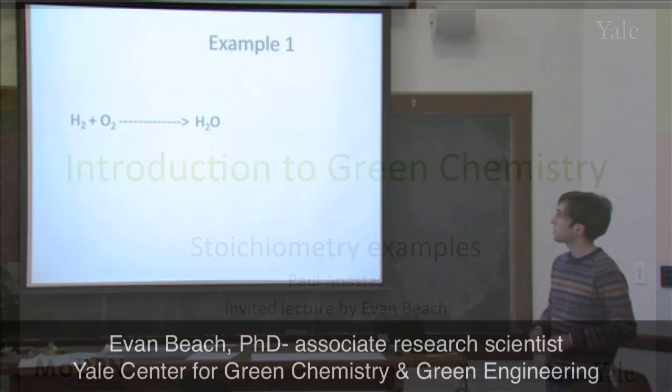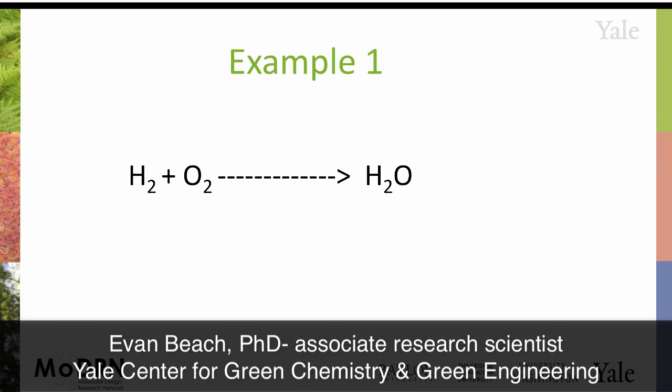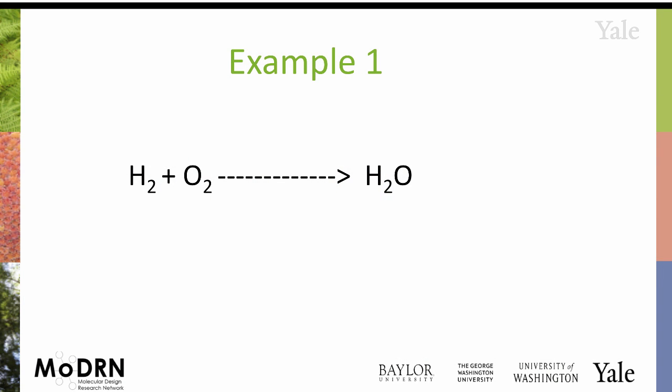Talking about balancing equations, looking at this first equation here, this is a correct reaction. So if you want to make water, you can combine hydrogen gas and oxygen gas, but if you just inspect the two different sides, you can see the number of atoms is not balanced. There's two hydrogens on the left side, two on the right, that's okay. But on the oxygen side, there is two on the left and only one on the right, so we need to balance the oxygen.